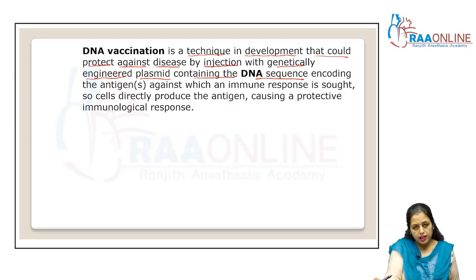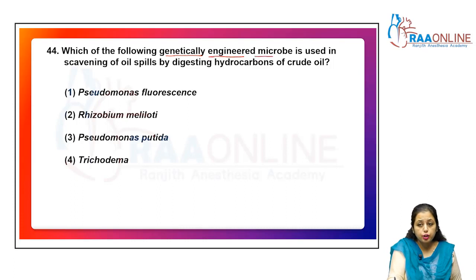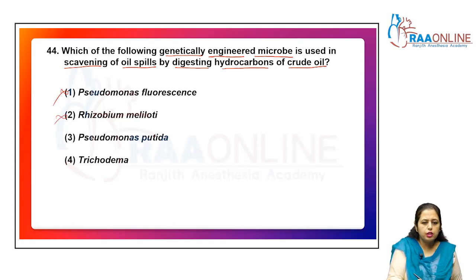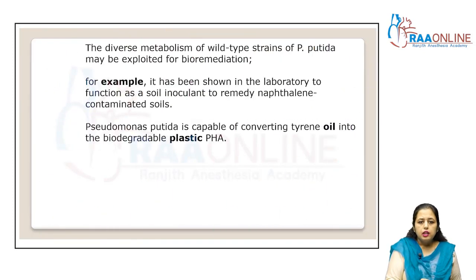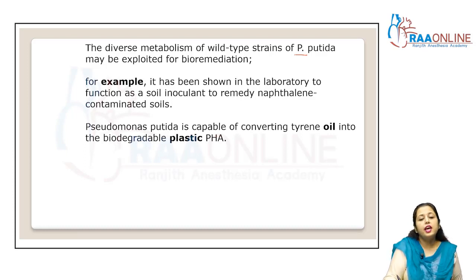The genetically engineered microbe used in scavenging oil spills by digesting hydrocarbons of crude oil is Pseudomonas putida — not Pseudomonas fluorescens, Rhizobium meliloti, or Trichoderma. The answer is option 3. The diverse metabolism of wild-type strains of Pseudomonas putida can be exploited for bioremediation; it has been shown to function as a soil inoculant to remedy naphthalene-contaminated soil and is capable of converting styrene oil into biodegradable plastic (PHA).